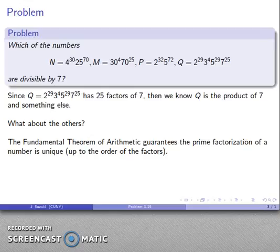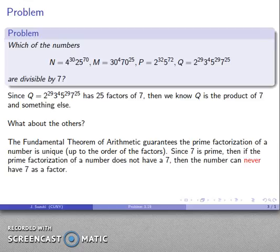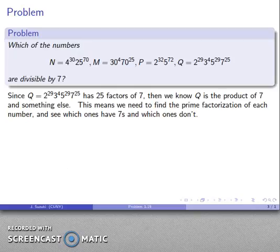What about the others? Well, the Fundamental Theorem of Arithmetic guarantees that the prime factorization of a number is unique up to the order of the factors. Seven is prime, so I know that if the prime factorization of a number does not have a seven, then the factorization of that number can never have seven as a factor. If I don't have a seven, I can't get it in. That means I need to find the prime factorization of each number and see which ones have sevens and which ones don't.